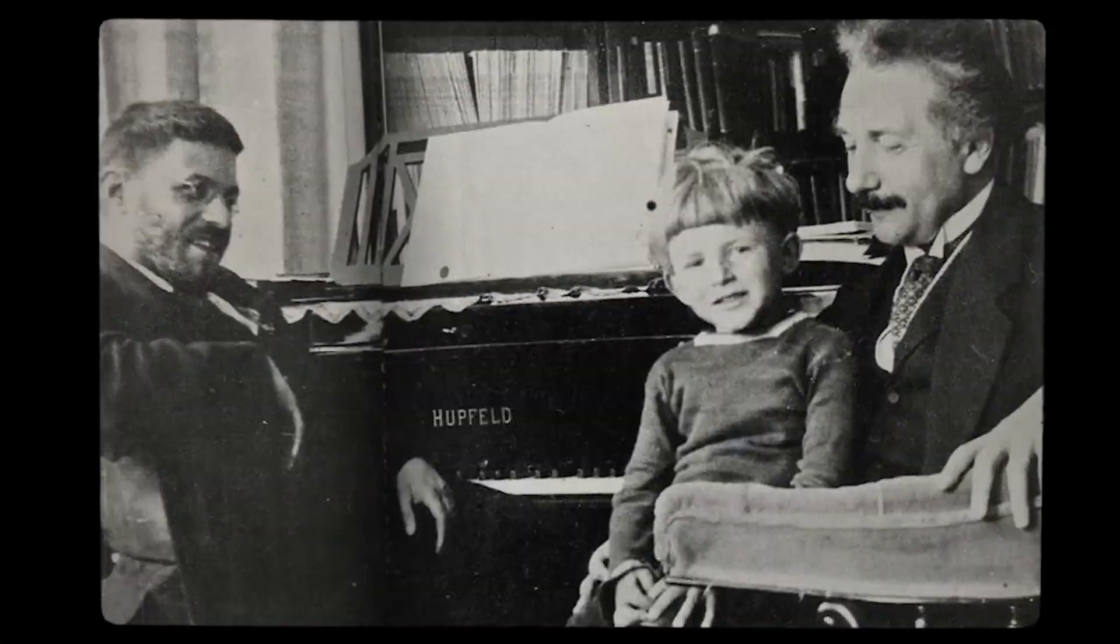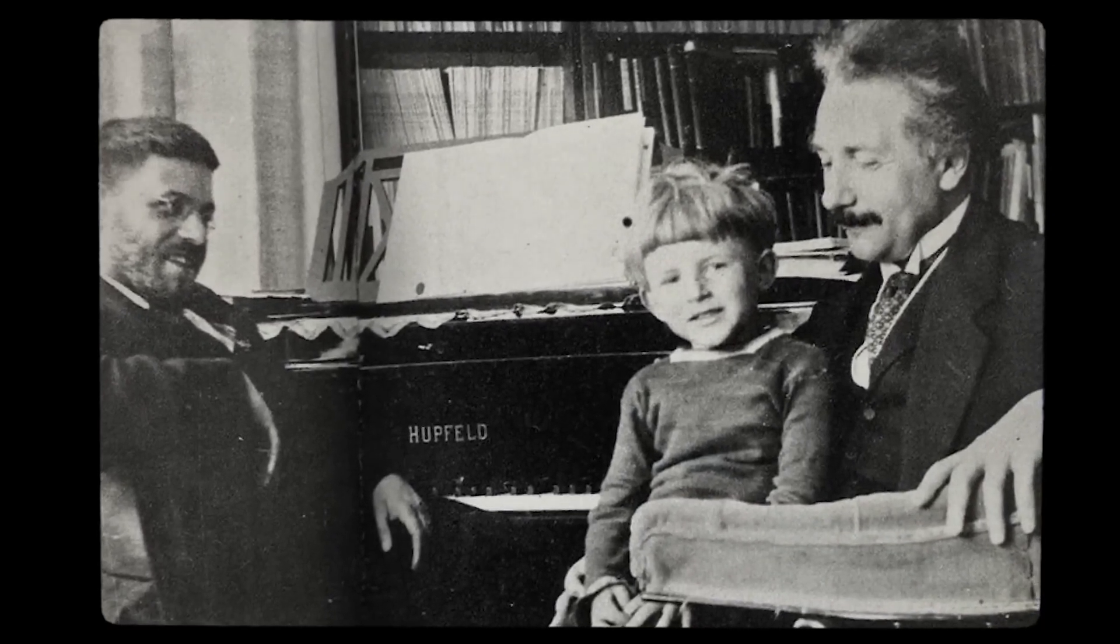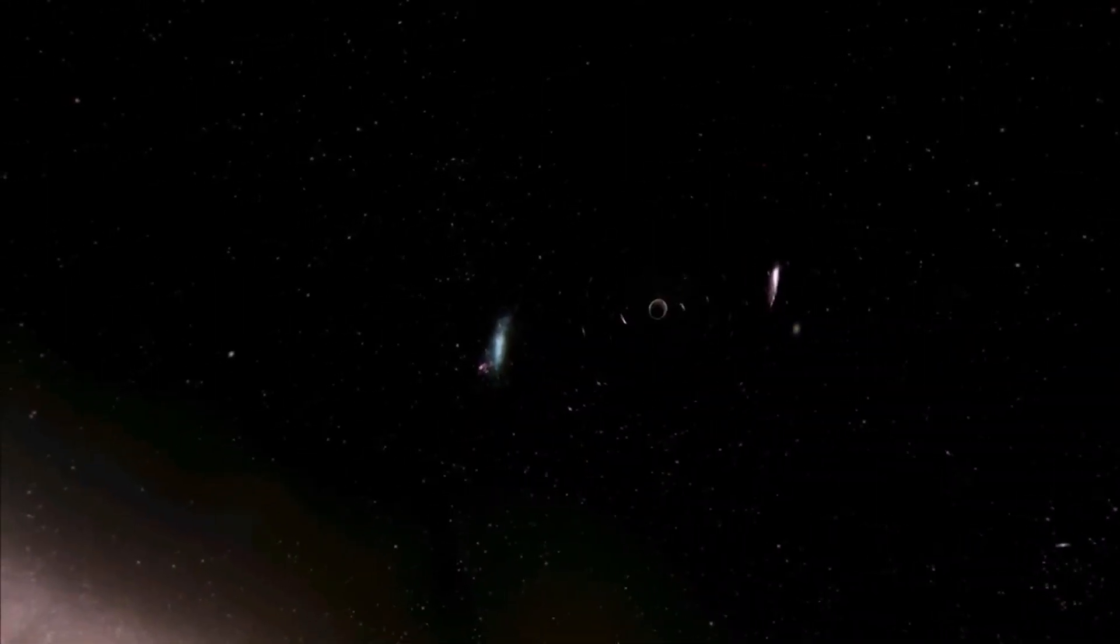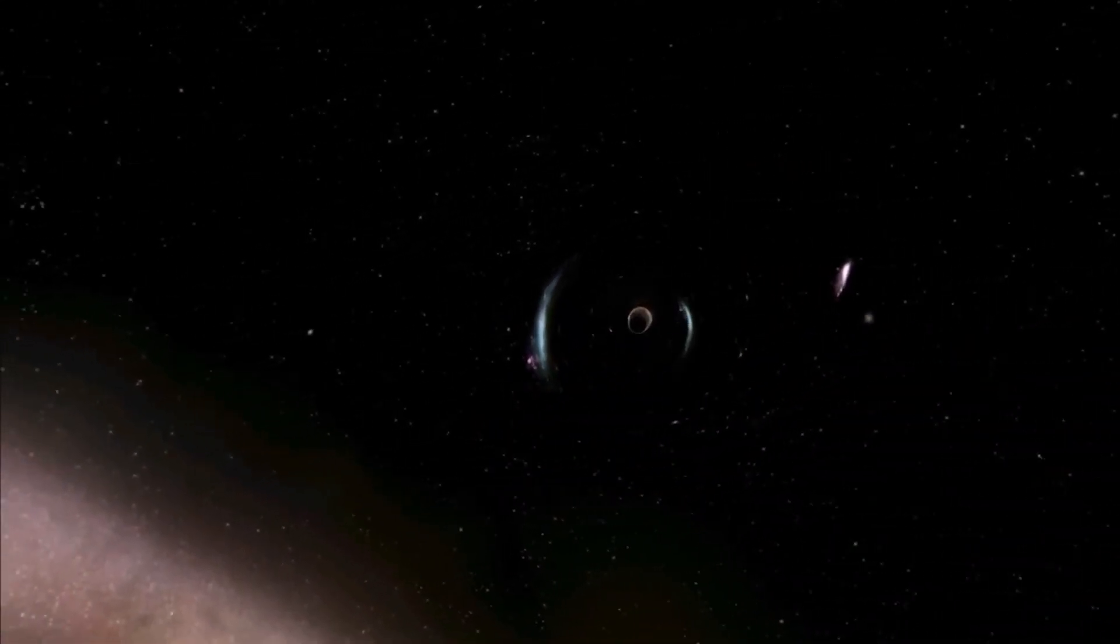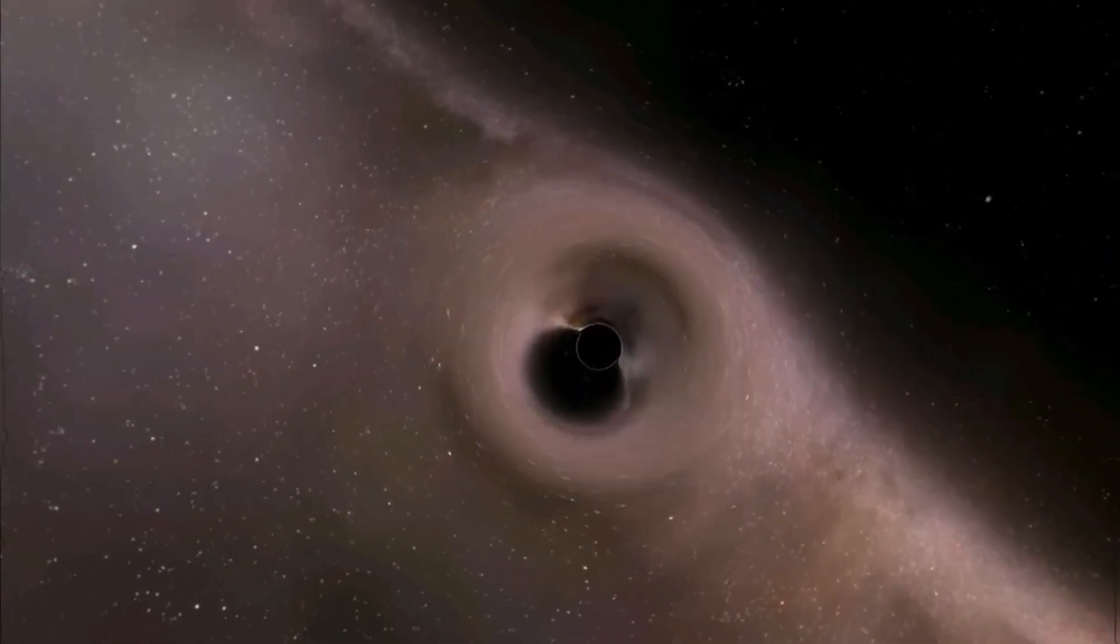This phenomenon, predicted by Einstein's theory of relativity, is due to the warping of space-time caused by the intense mass of the black hole. The event horizon is not a solid physical surface like the crust of a celestial object, but represents a mathematical boundary beyond which the structure of space and time behaves in a way that defies our intuition.